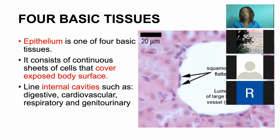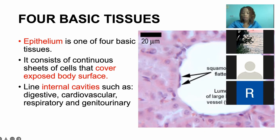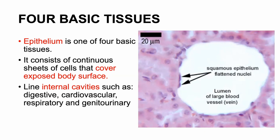Epithelium is a continuous sheet of cells that covers exposed body surfaces and internal cavities. It covers your skin, your nose, your gastrointestinal tract, your respiratory tract — all tracts. Depending on where it is covering, there are different cells, and the characterization of those cells varies based on whether the lining is external or internal. For example, this image shows squamous epithelium that lines the large blood vessels.